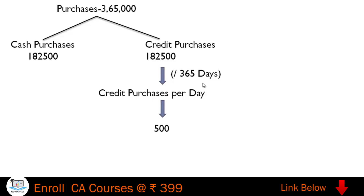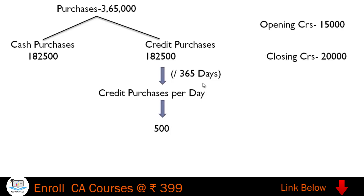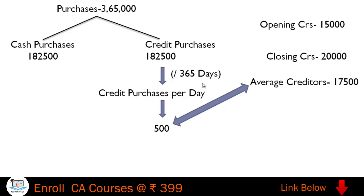Credit purchases per day equals one lakh eighty-two thousand five hundred divided by 365, which is five hundred per day. For average creditors, opening creditors are fifteen thousand and closing creditors are twenty thousand, giving average creditors of fifteen thousand plus twenty thousand divided by two, that is seventeen thousand five hundred.